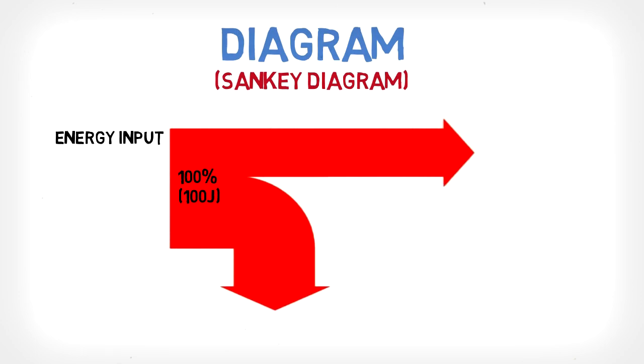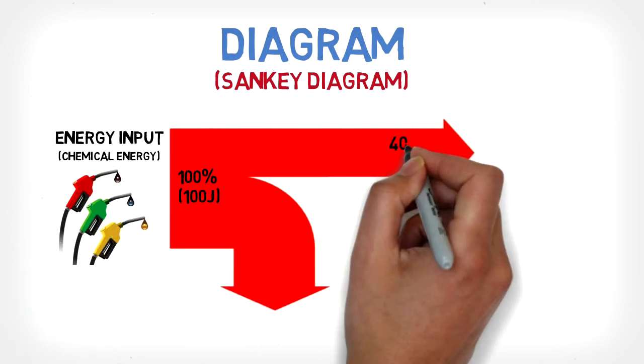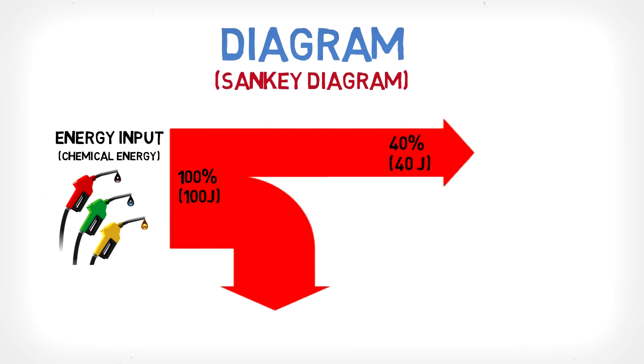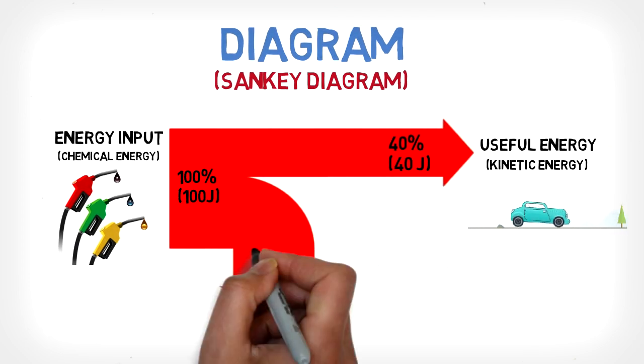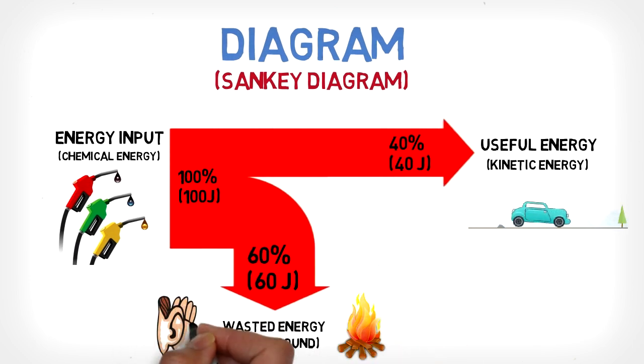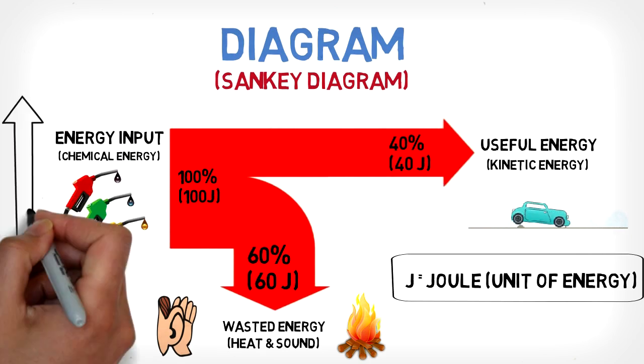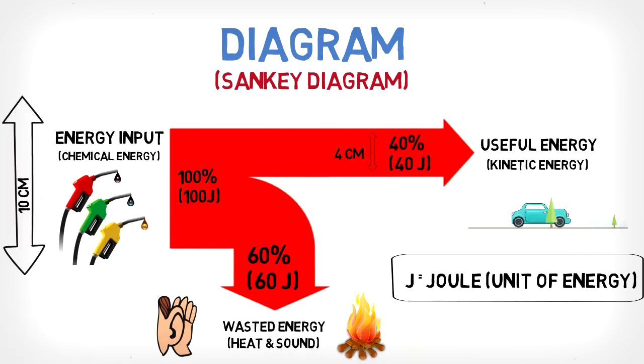If we for example say that 40% of the energy is converted into kinetic energy to move the car forward, that means that 60% of the energy input is transformed into wasted energy such as heat and sound. And always remember, when drawing a Sankey diagram, the width of the arrows is always proportional to the amount of energy involved.